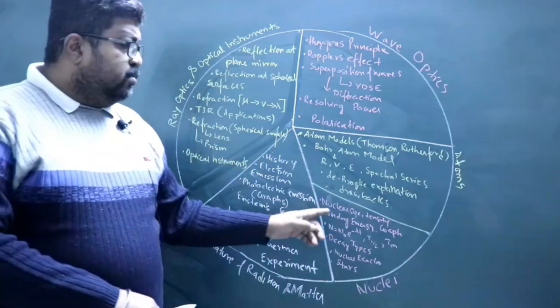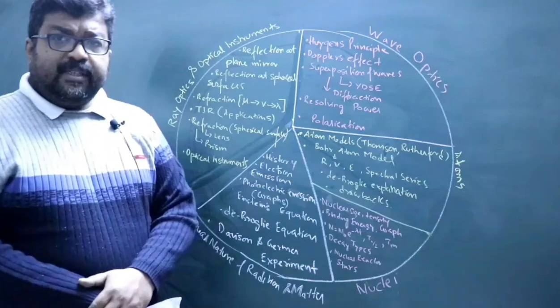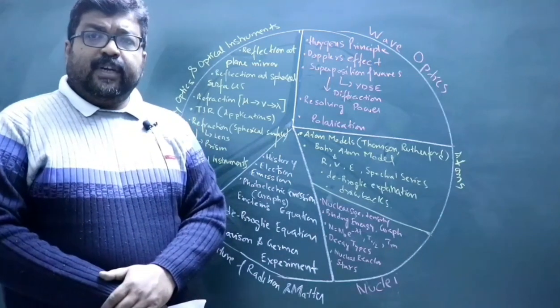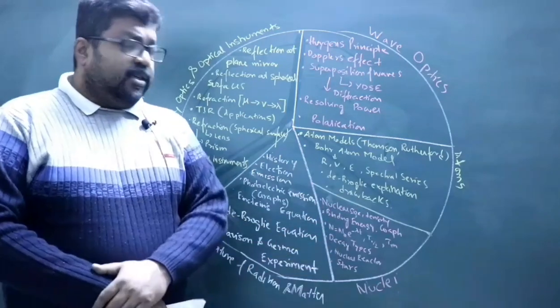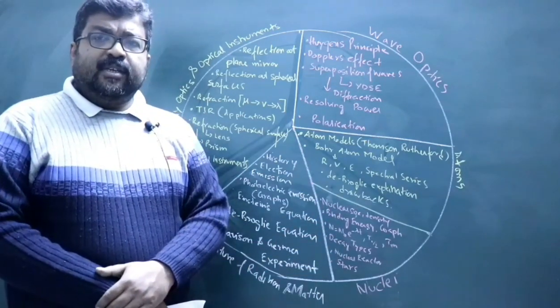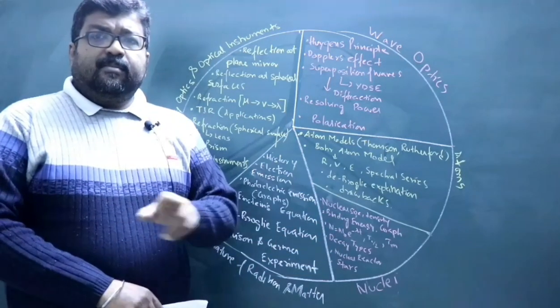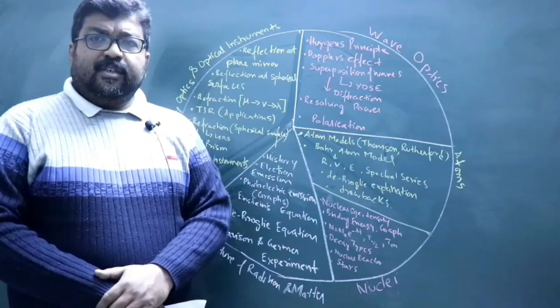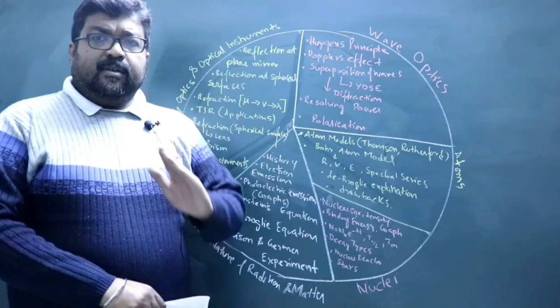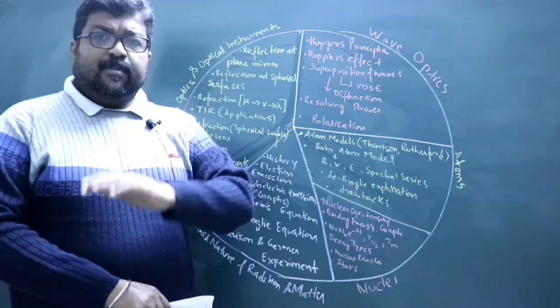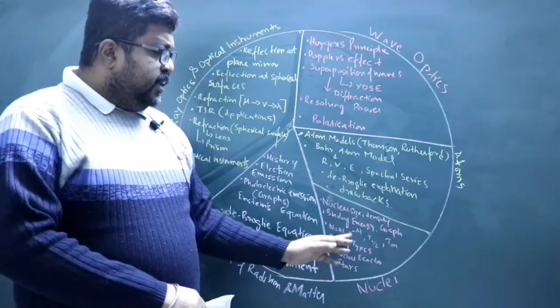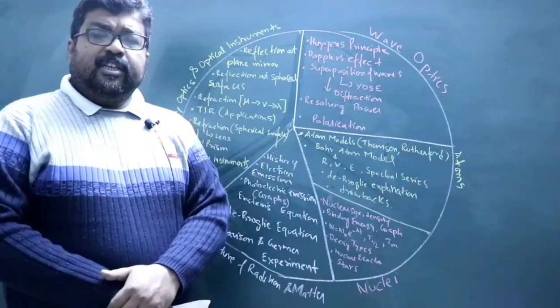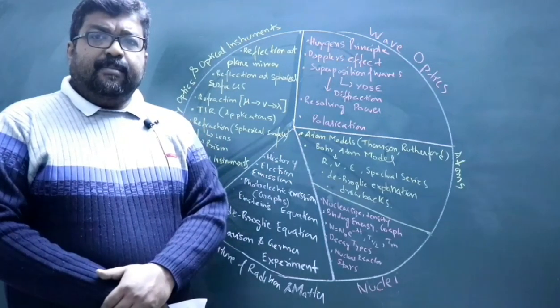Then coming to the chapter Nuclei - expression for nuclear size. Then you have to prove that nuclear density is constant for all nuclides. Then how to calculate binding energy, the binding energy curve, discussion of the binding energy curve, and the concept of stability from the binding energy curve.